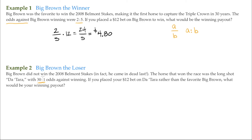Again, we write the odds as a fraction — 30 to 1. What this means is that for every $1 you bet on Datara, if Datara wins, you get $30 back. So 30 to 1 — we just multiply that by the amount of the bet. That comes out to be $360 — not a bad bet.